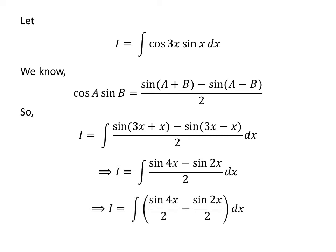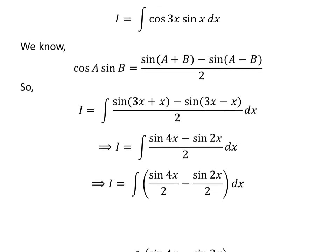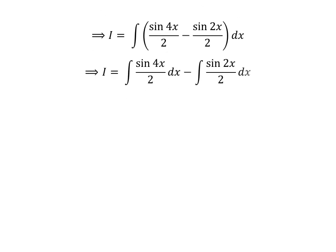The integrand can be expressed as a difference of two fractions. So, i is equal to the integral of sine of 4 times x upon 2, minus sine of 2 times x upon 2, with respect to x. Applying the linearity property of integrals gives us i equal to the integral of sine of 4x upon 2 with respect to x, minus the integral of sine of 2x upon 2 with respect to x.